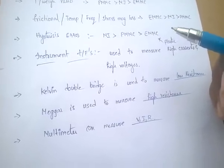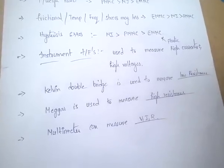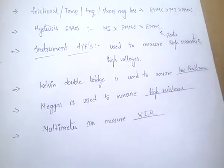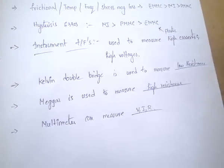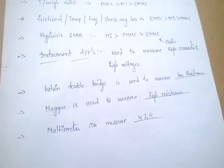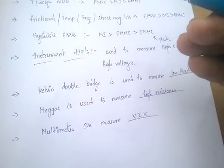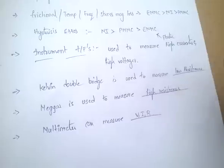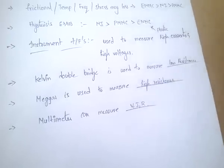Coming to the scale: PMMC has a uniform scale but the remaining meters have non-uniform or non-linear scales. MI type: theta proportional to I squared. Electrostatic type: theta proportional to V squared. For damping: PMMC uses eddy current damping; MI type and electrodynamometer types use air friction damping.